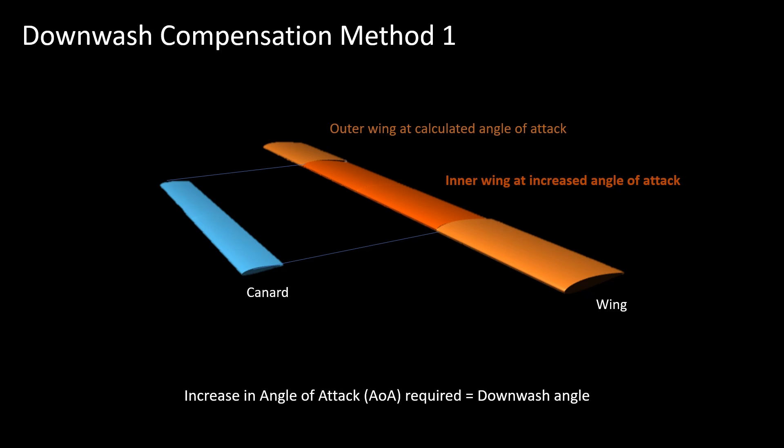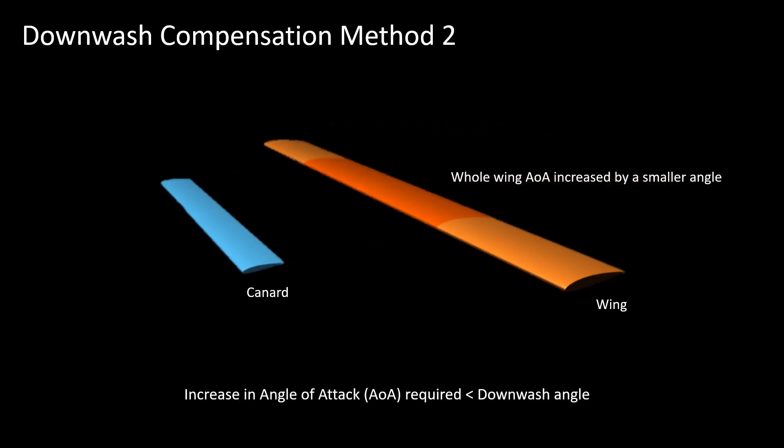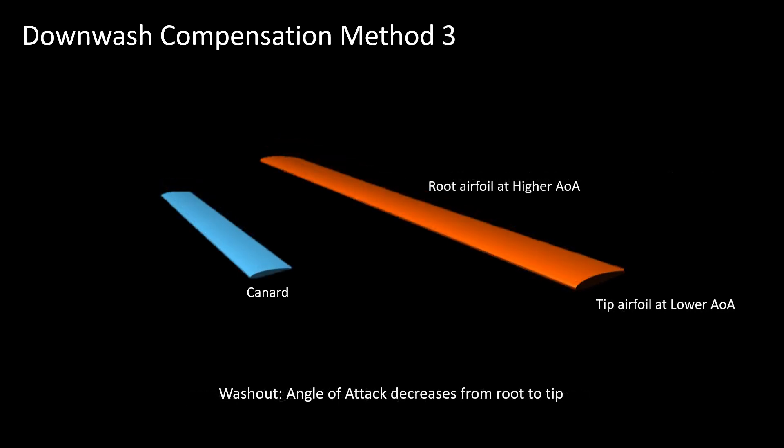But this method will require a break in the wing. A simpler method is to increase the angle of attack of the whole wing by a lesser angle. Another method is to introduce washout: increased angle of attack at the root and decreased angle of attack at the tip.